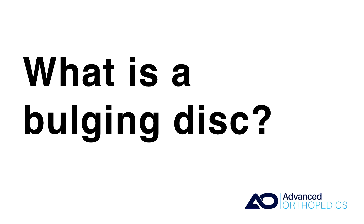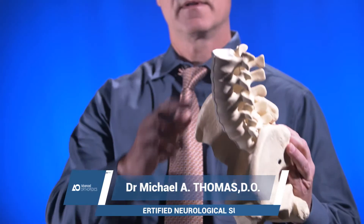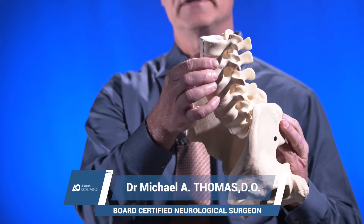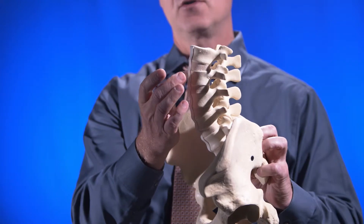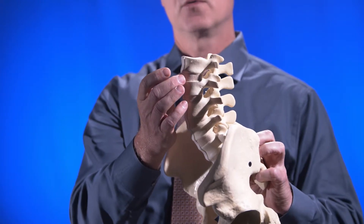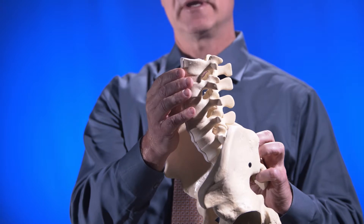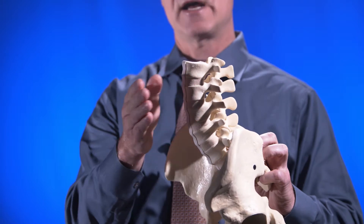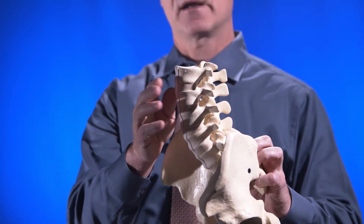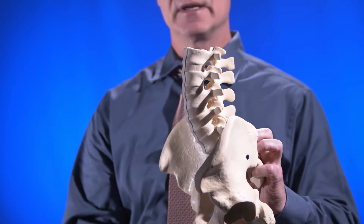When a disc bulges, generally what that means is the outer covering of a disc has collagen fibers that become weakened, and the internal portion of the disc, which we call the nucleus, begins to push out on these fibers and it causes a bulge of the disc.